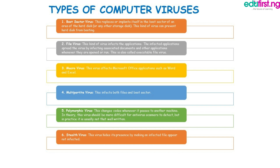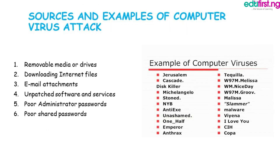Now let's examine sources and examples of computer virus attacks. Number one: removable media or drives. Number two: downloading internet files. Number three: email attachments. Number four: unpatched software and services. Number five: poor administrator passwords. Number six: poor shared passwords.